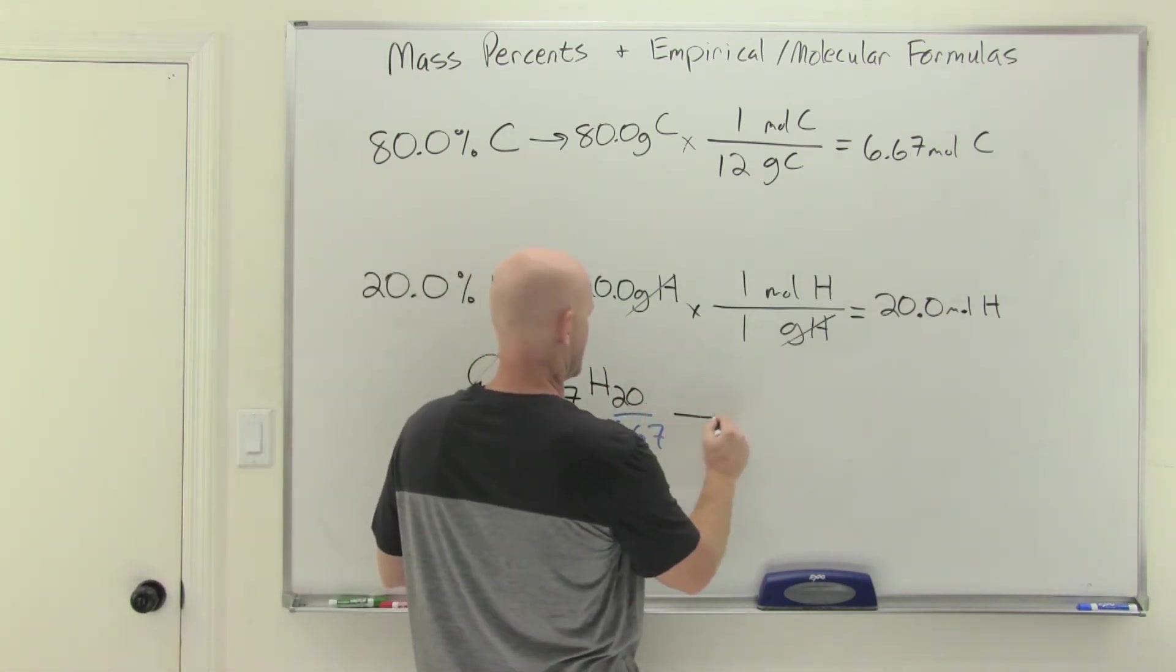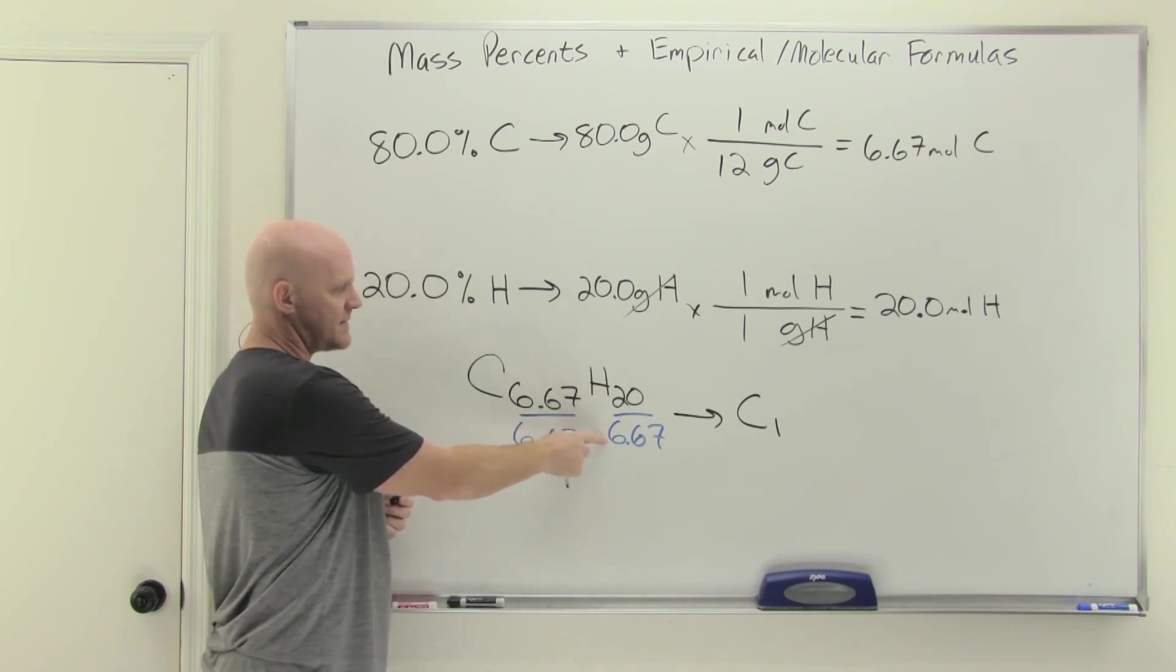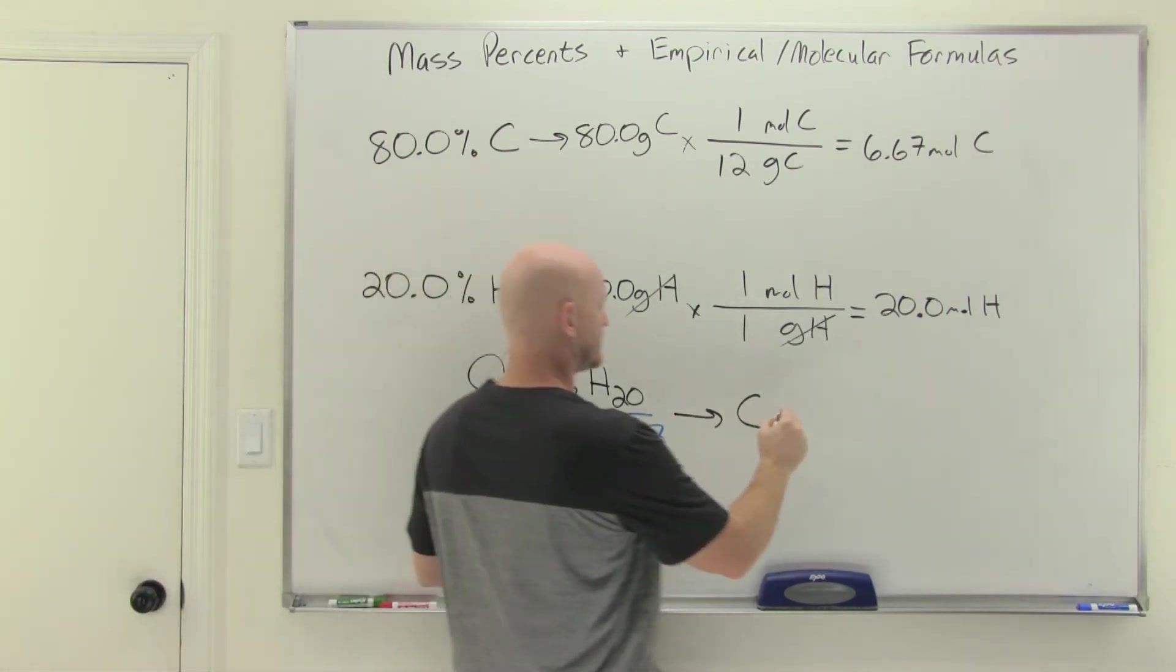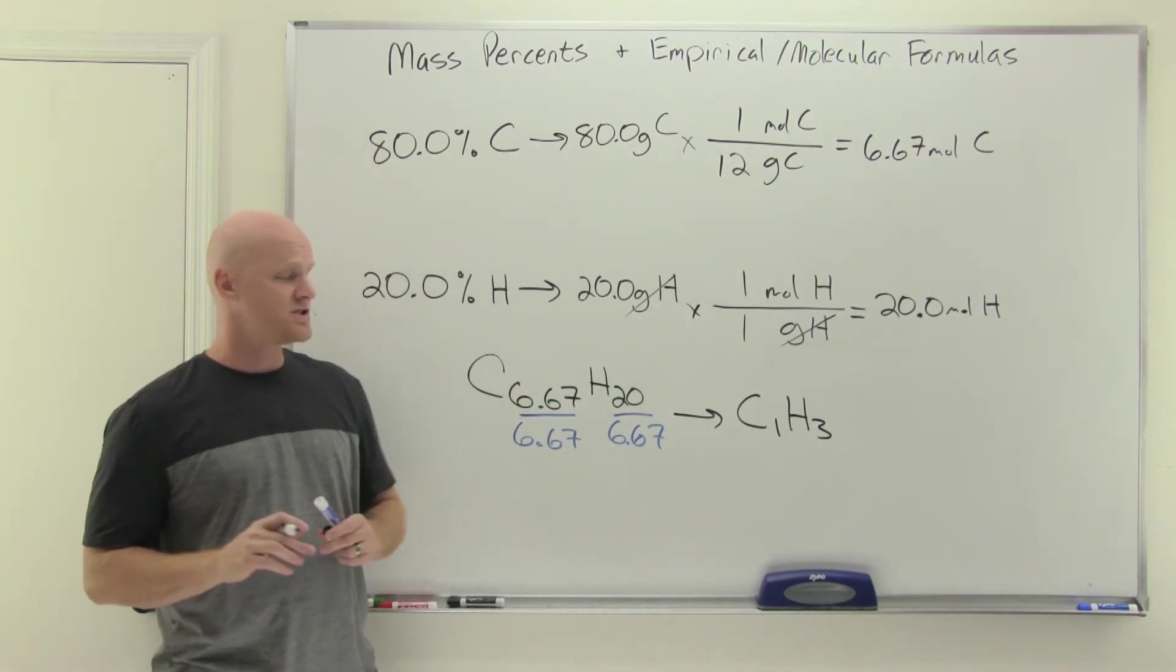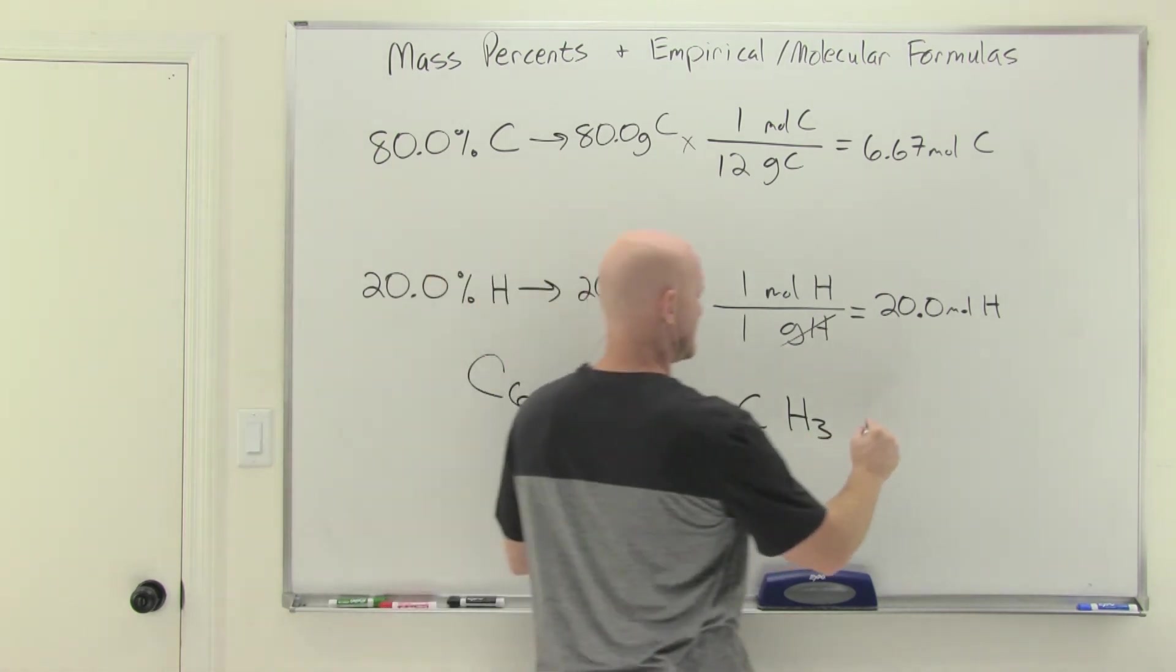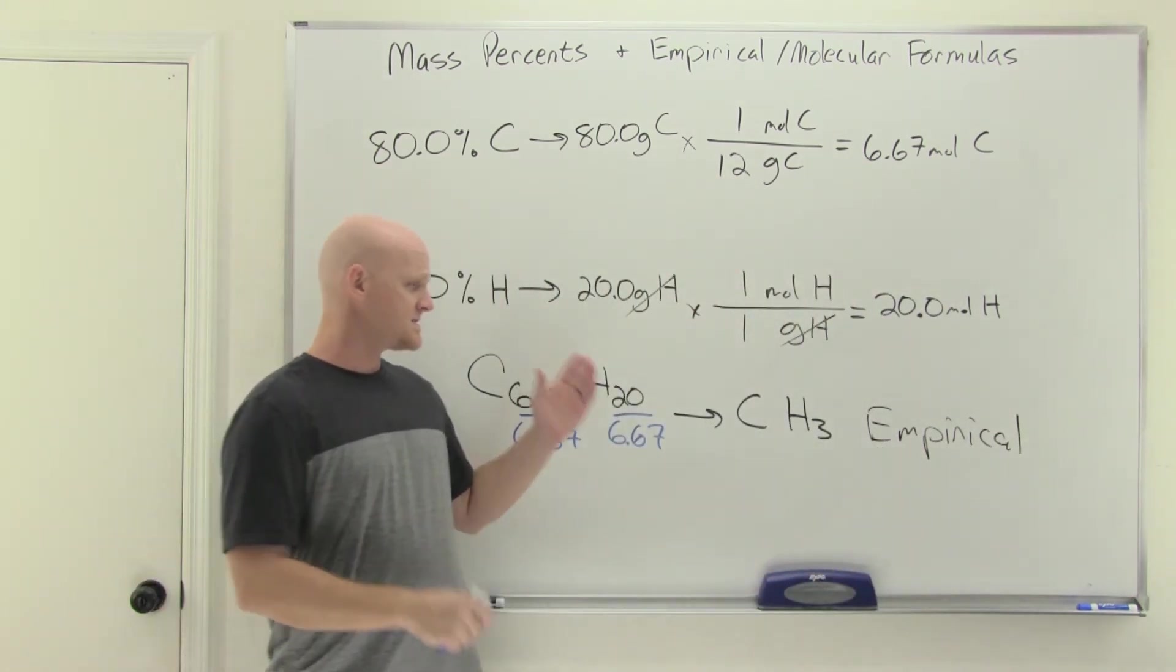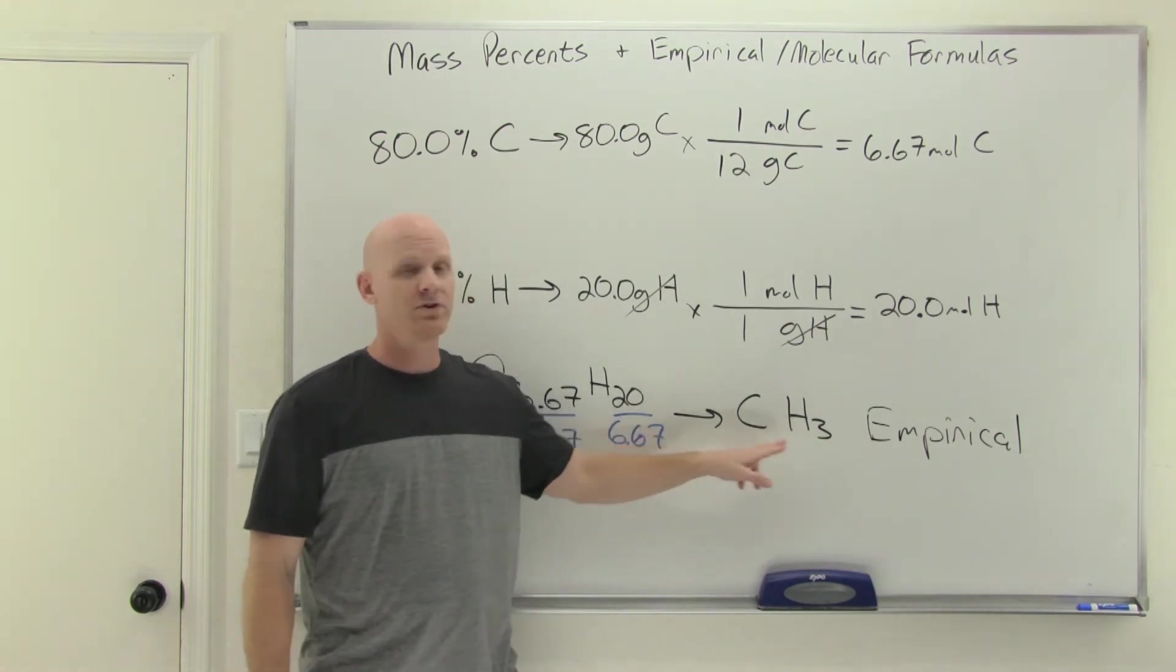If you carry this out, you get C1 obviously. And then 20 divided by 6 and 2 thirds, if you actually plug this into your calculator, is almost exactly 3. Because it's close to a whole number, we will round it. Had that not been a whole number, we would have taken a different approach. But it was a whole number. We don't usually write C1H3. We just write CH3. That is our empirical formula. In whatever compound this is, the carbon and hydrogen atoms are in a 1 to 3 ratio. That is a mole to mole ratio.